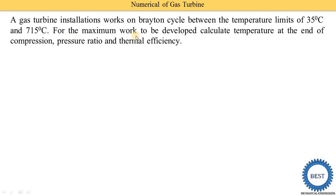For maximum work to be developed, we need to calculate: the temperature at the end of compression (T2), and the pressure ratio RP, which is P2 upon P1.